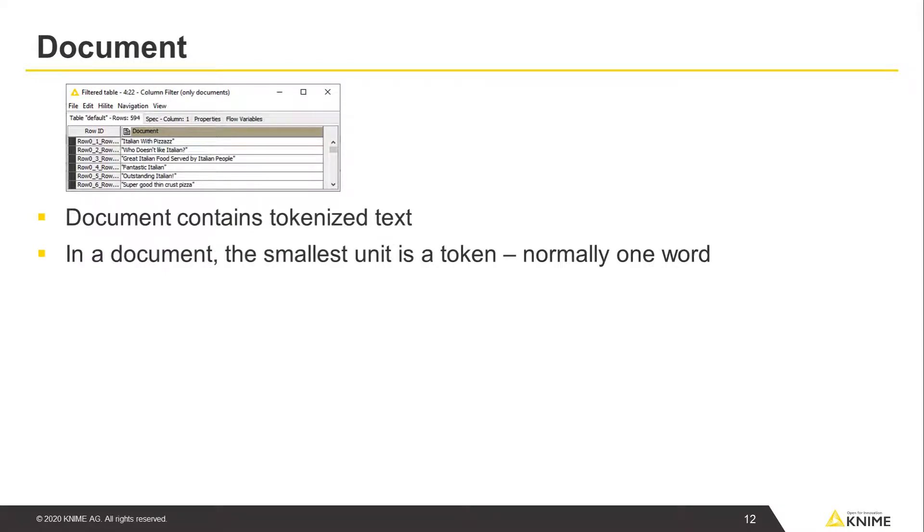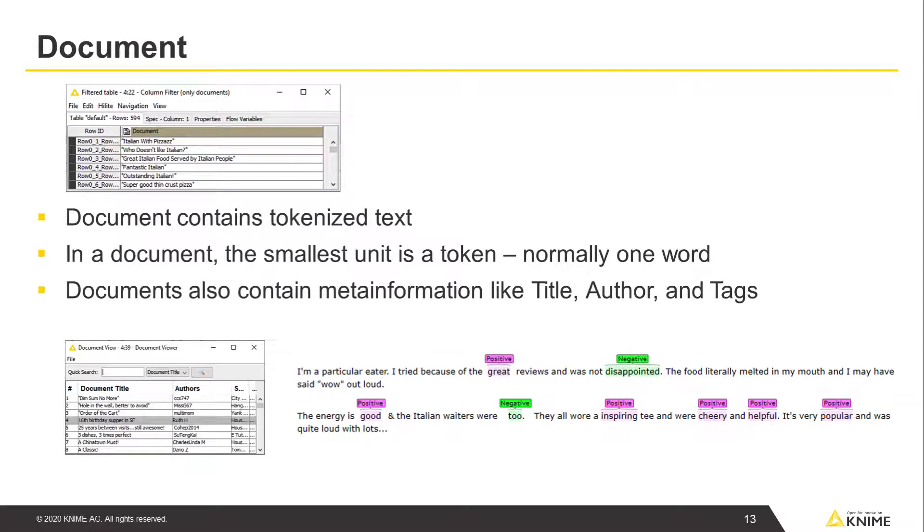Important for text mining with KNIME Analytics Platform is a special cell type called a document, which contains the tokenized text. In a document, the smallest unit is a token, which is normally one word. In addition to several tokens, documents also contain meta information like title, author, and tags.